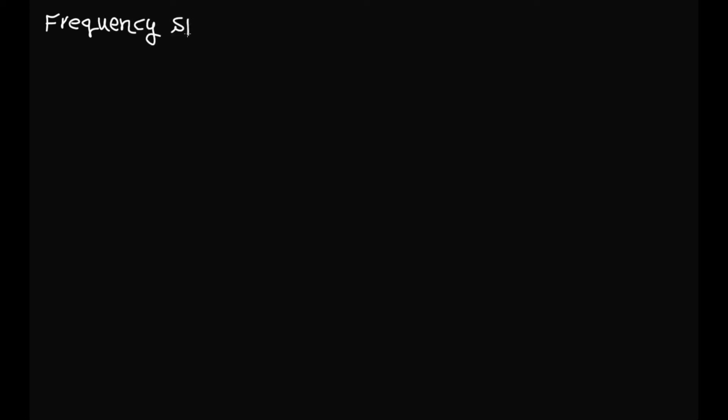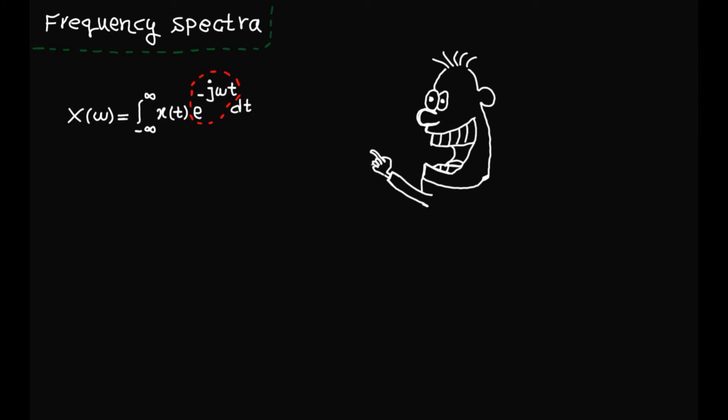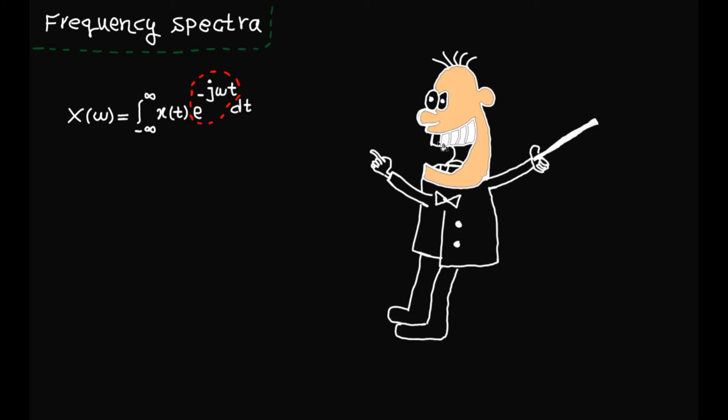In this lecture, I'm going to talk about frequency spectra of signals. As we learned before, Fourier transform for x(t) is defined using this integral. As you can see, there is a complex exponential function here. So in general, Fourier transform is a complex number.